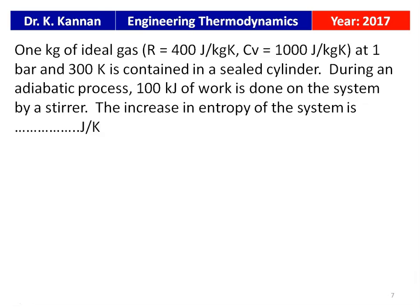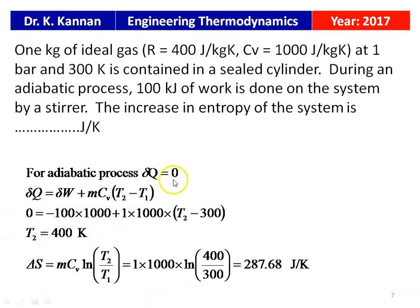From the 2017 question paper: 1 kg of ideal gas with R = 400 J/kg·K and CV = 1000 J/kg·K at 1 bar and 300 K is in a sealed cylinder. During an adiabatic process, 100 kJ of work is done on the system by a stirrer. Using the first law with Q = 0: −(−100,000) = 1 × 1000 × (T2 − 300), giving T2 = 400 Kelvin.